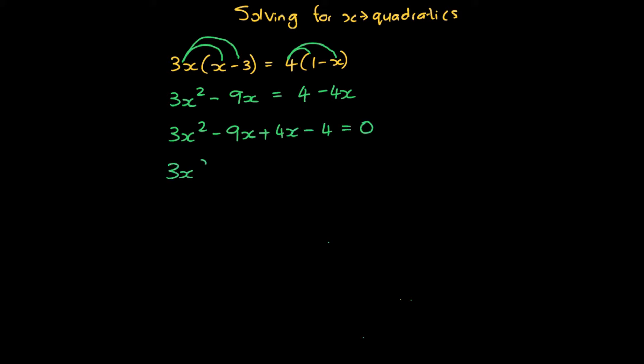So we then have 3x squared minus 5x minus 4 equals 0. And there's different ways in which you can now solve this, either through factorization or also using the quadratic formula.